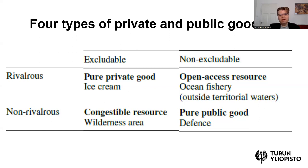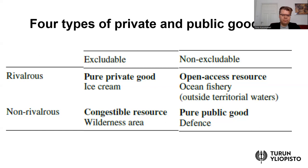Moving to non-excludable resources, an example of a rivalrous non-excludable resource is an ocean fishery outside of territorial waters — an open access resource. Because there is no government control or property right assigned, you cannot exclude anybody from entering this fishery. However, it is rivalrous: if one vessel is catching the fish, that fish is no longer available for other vessels, and in the most extreme case it might lead to the extinction of the fish in that area.